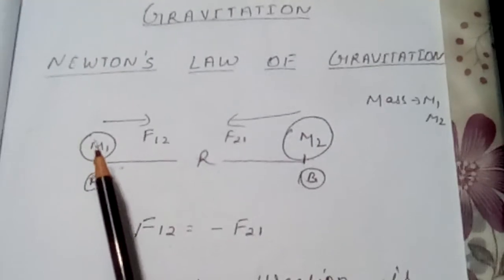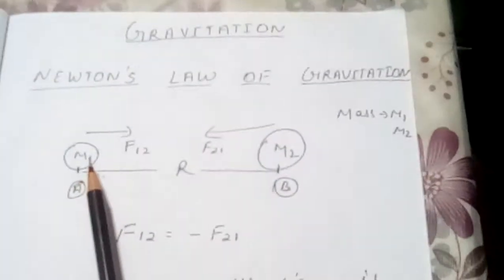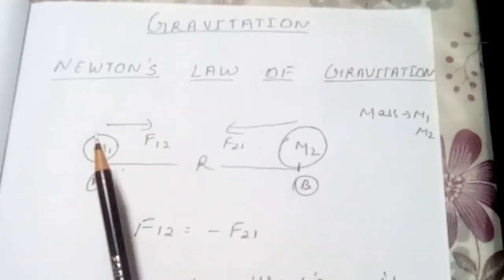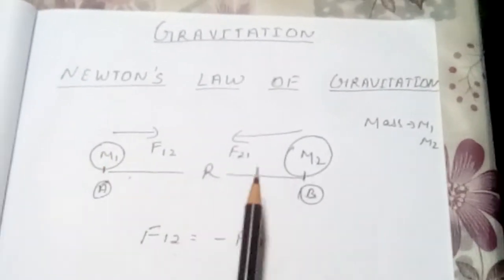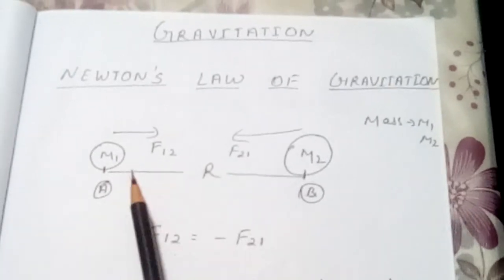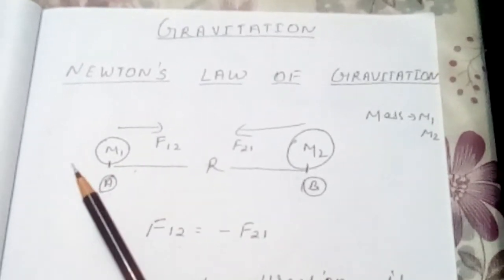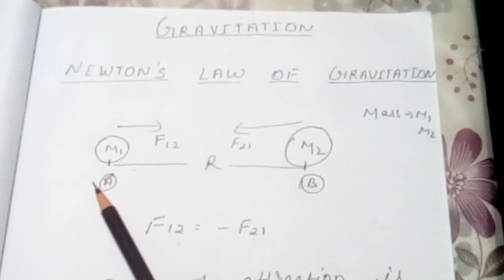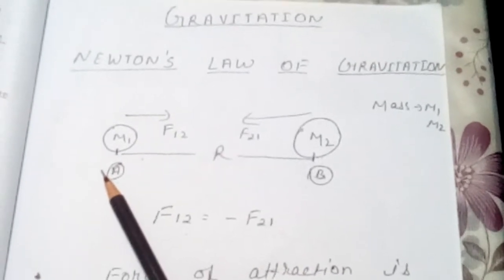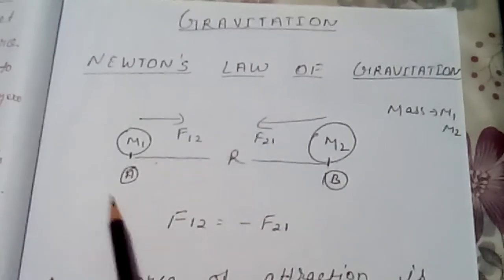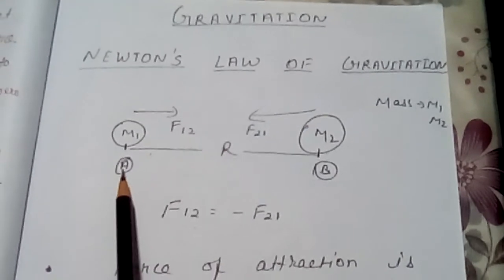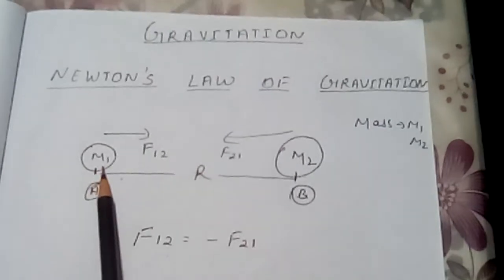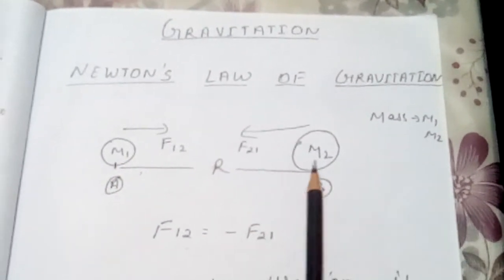Newton has given a brilliant idea for the whole universe. He said that in the universe every two masses attract each other, whether the mass is very small or the mass may be heavenly bodies. So here I am showing you I have taken two bodies: Body A and Body B. Body A has mass M1, Body B has mass M2.